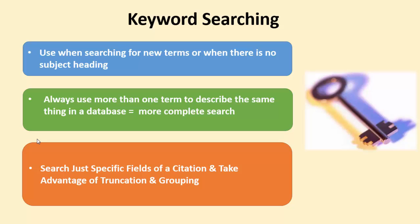In review, keyword searching is valuable but does come with its drawbacks. You're going to have to use keyword searching any time you're searching for a new term or there's no subject heading available. But when a subject heading is available, use it — because subject headings help make up for some of the drawbacks of doing a keyword search. Also, be sure to use more than one term to describe the same thing in a database, which will help you do a more complete search and get the articles needed to answer your research question.